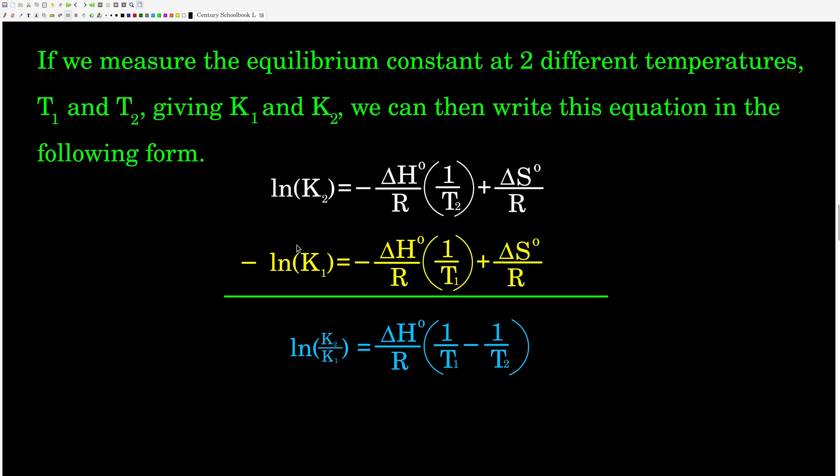Natural log of K2 and then natural log of K1. And if we subtract these, then first the ΔS° over R cancels. Using the property of logs that natural log of A minus natural log of B equals natural log of A over B, we get natural log of K2 over K1. And the negative signs move things around a little bit.